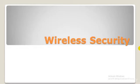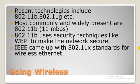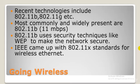Let's start. There are different types of securities. Recent technologies have 802.11b and 802.11g. The most commonly used is 802.11n, that's up to 11 Mbps. 802.11b uses security techniques like WEP to make the network secure, but WEP is not that secure — it's very easy to crack. Finally, we have the IEEE 802.11x standards for wireless Ethernet.